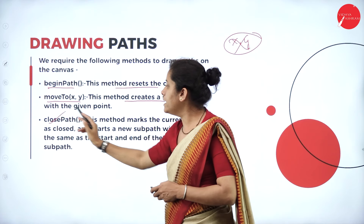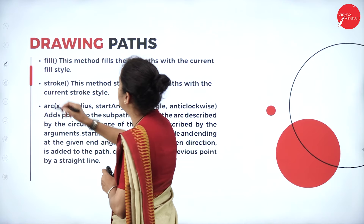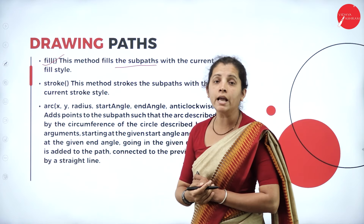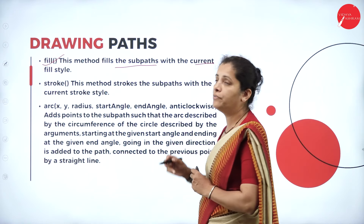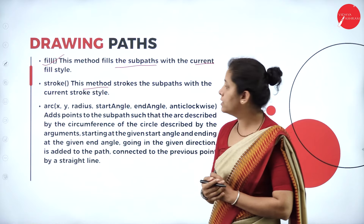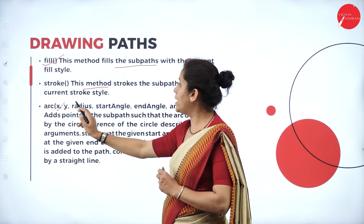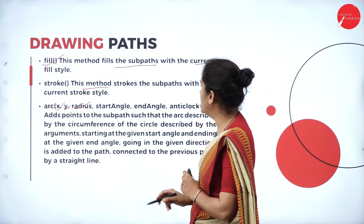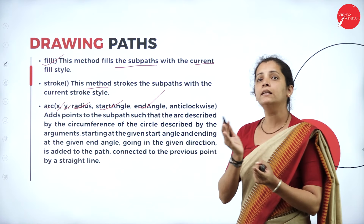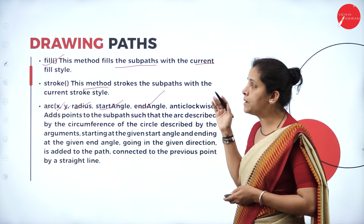closePath closes the current path and creates a new sub-path. Then there is fill — it fills the sub-path with the current fill style. Stroke strokes the sub-path with the current stroke style. And arc takes x coordinate, y coordinate, radius, starting angle, and ending angle in the anti-clockwise direction. These are the methods used to draw a path.